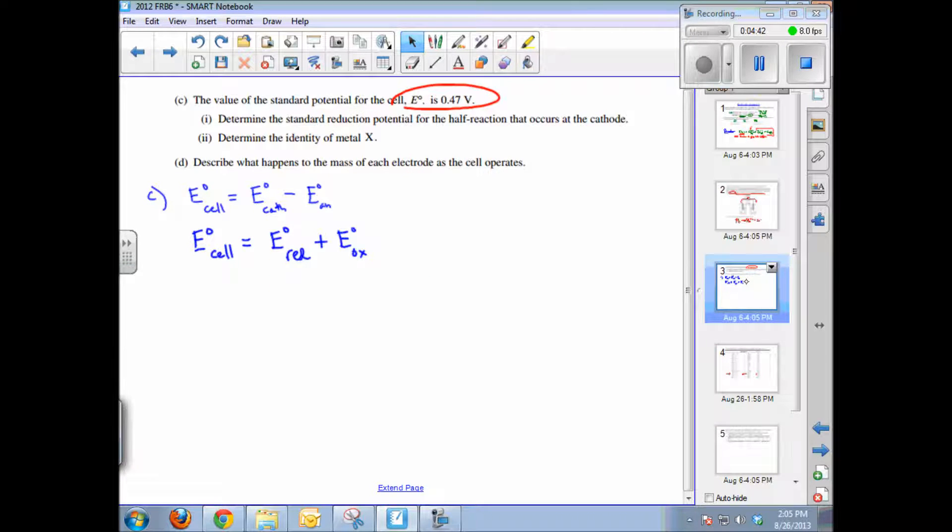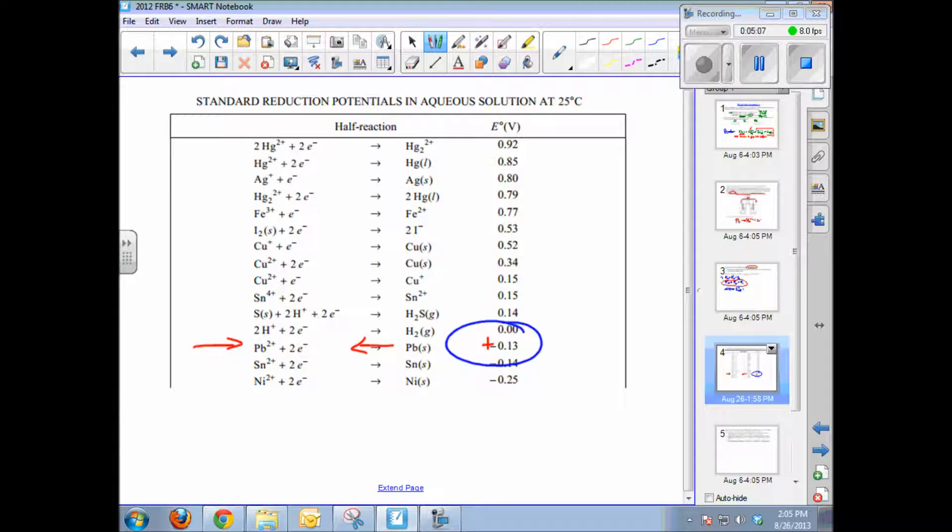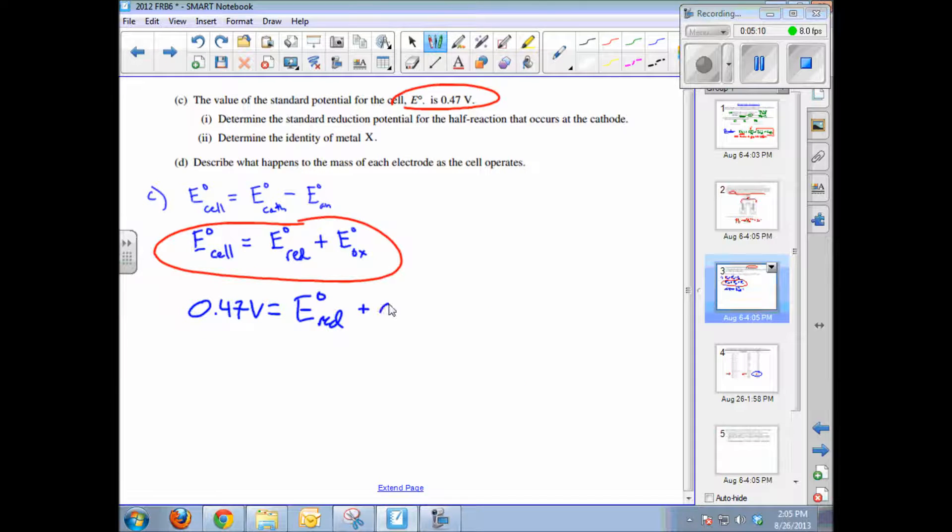So we now know some things that we can substitute into this equation right here. We know the overall cell potential, which was 0.47 volts, is equal to the cell potential for reduction. That's X, that's our unknown, plus the cell potential for lead. And we just looked at that. The number is positive 0.13 volts. So by simple subtraction, we know the reduction half cell potential is 0.34 volts.